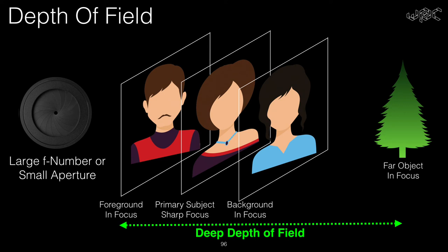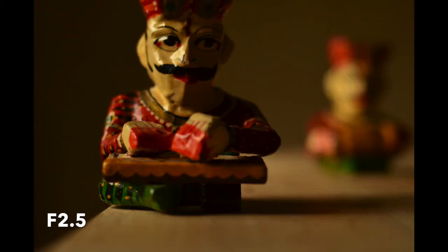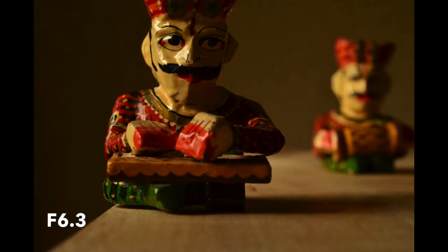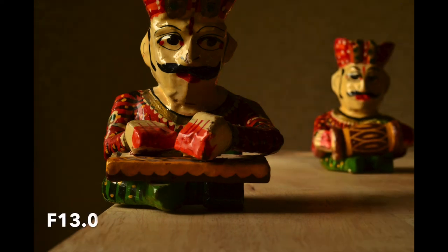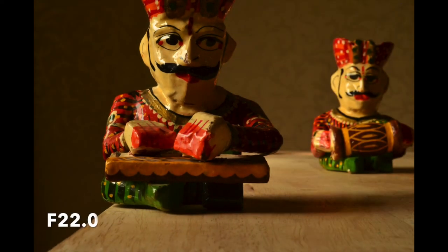Let's look at examples to understand depth of field. Here you can see that the object in the background is completely out of focus. With increasing f-numbers, it is gradually coming into focus more and more, and at f22 it is almost in focus. See how the depth of field is changing.